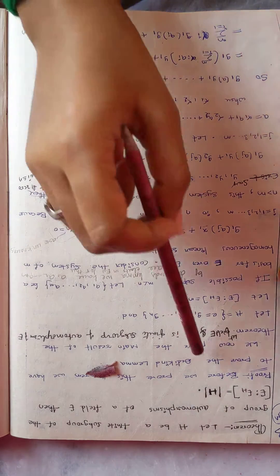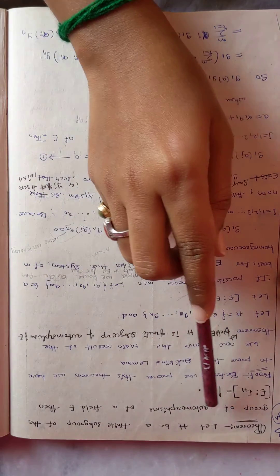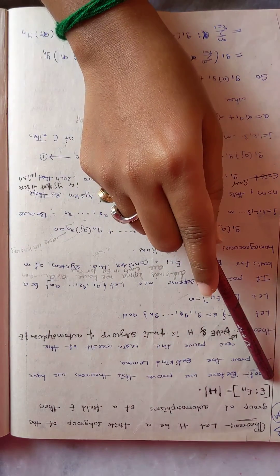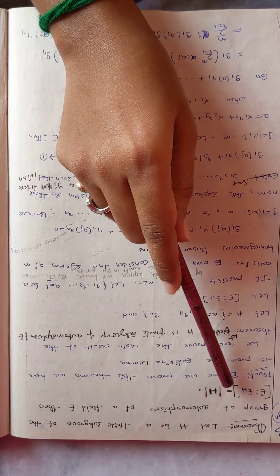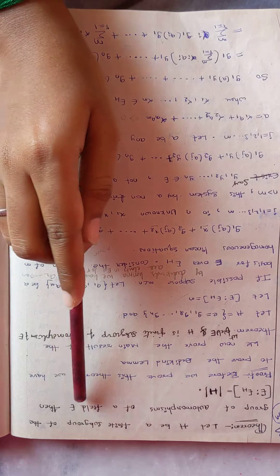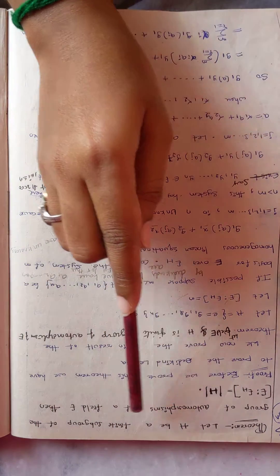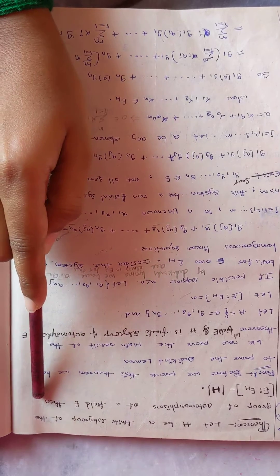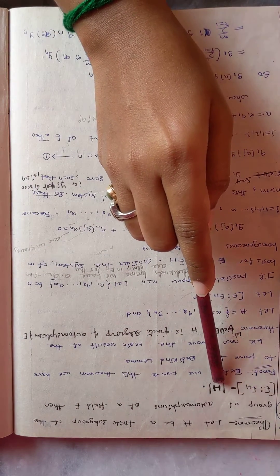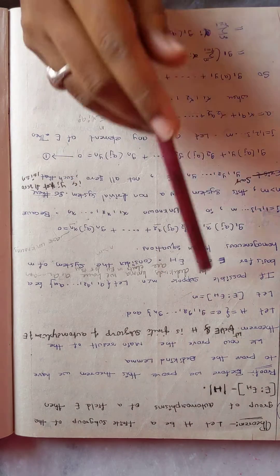We are proving this theorem. Given that H is a finite subgroup of the group of automorphisms of a field E, then we have to prove that the dimension of E over E^H is equal to |H|. We prove this theorem by using Dedekind's Lemma.